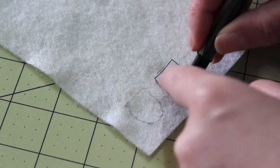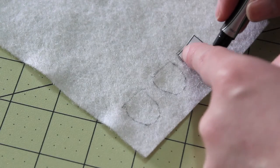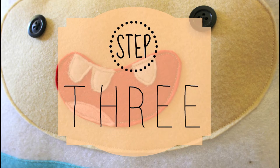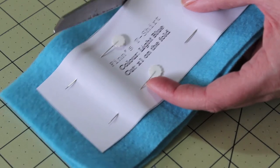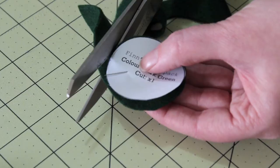For Finn's teeth, trace around the template piece with a sharpie pen three times. Next, carefully cut around each shape using fabric scissors. Take the pins out and place the felt pieces to one side.